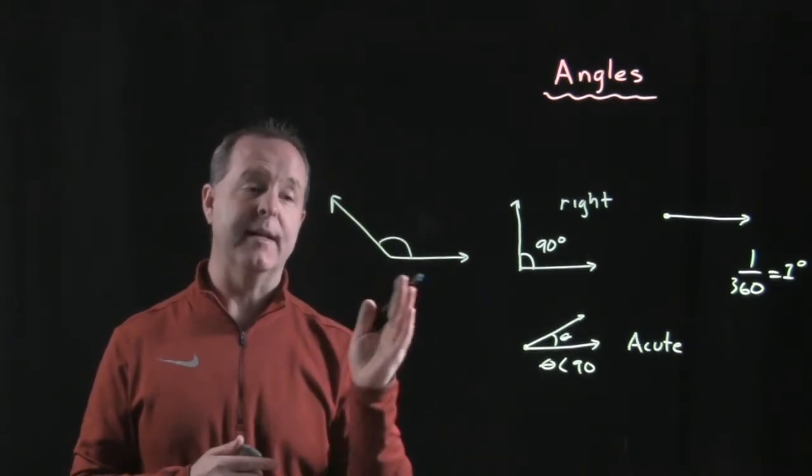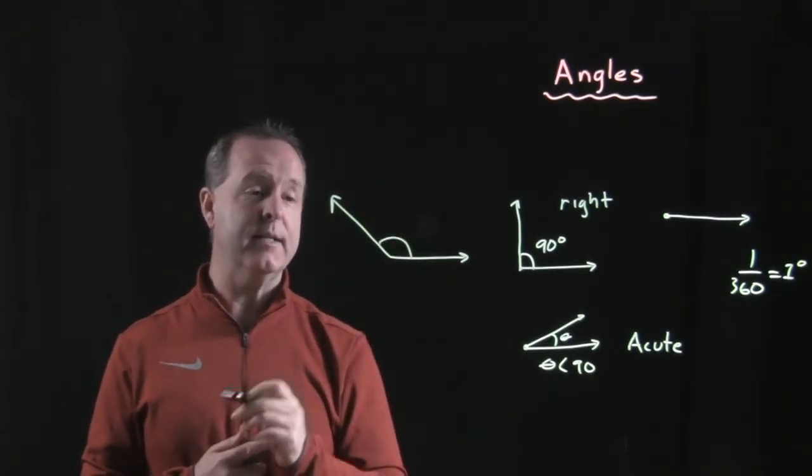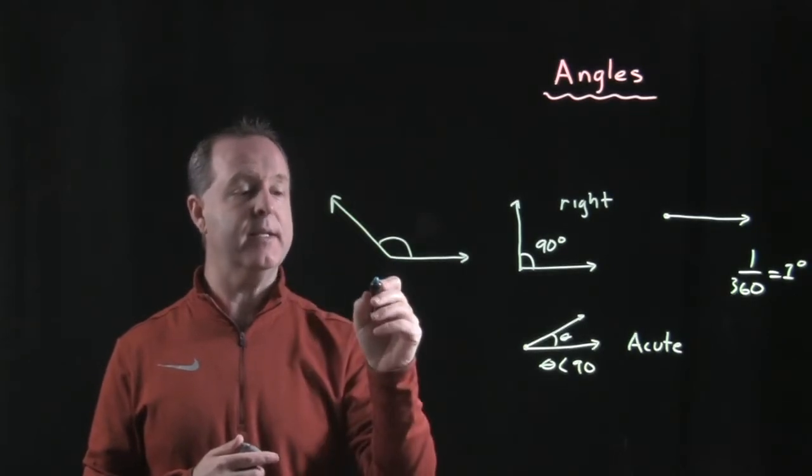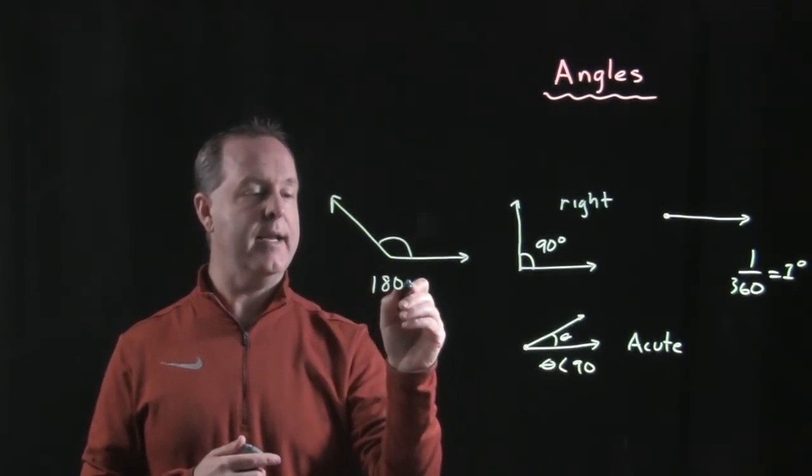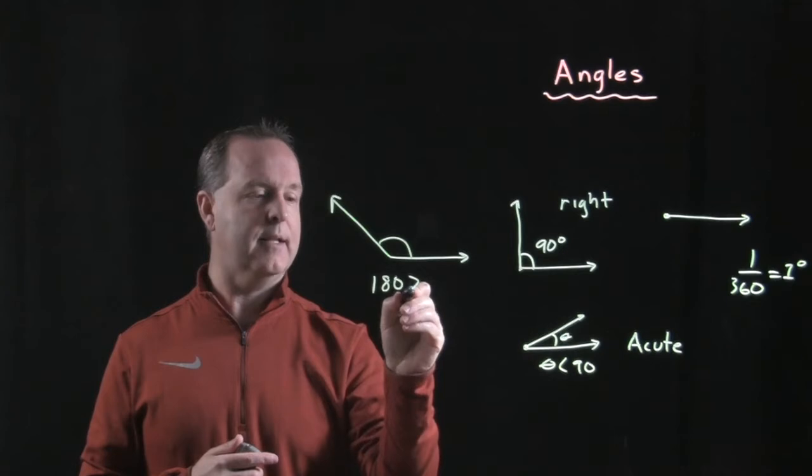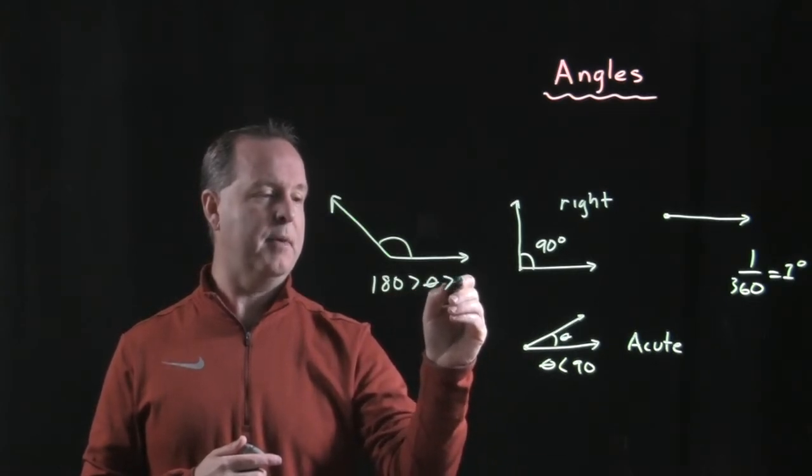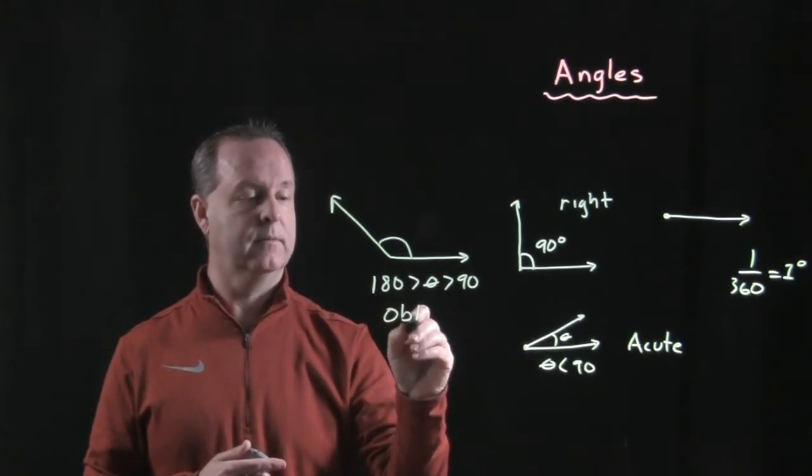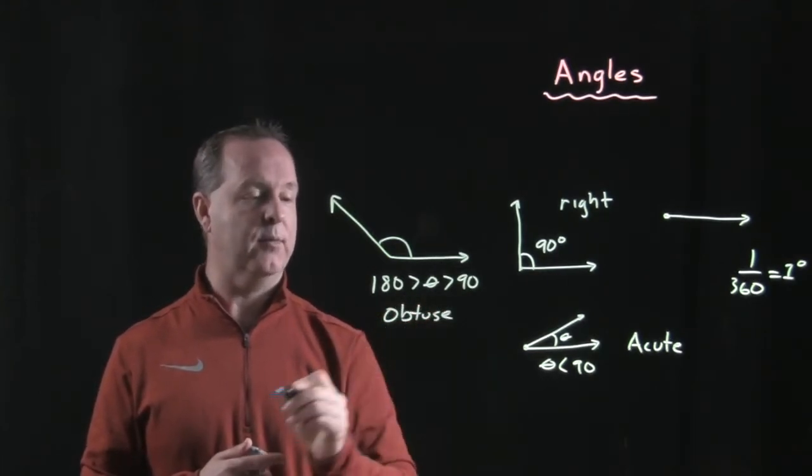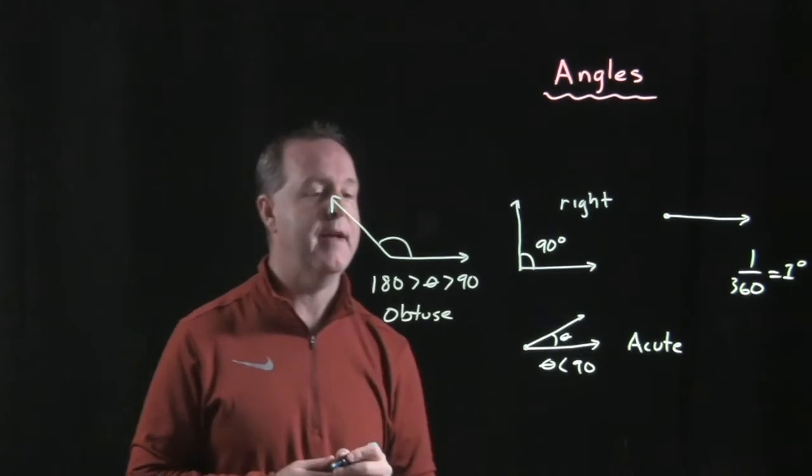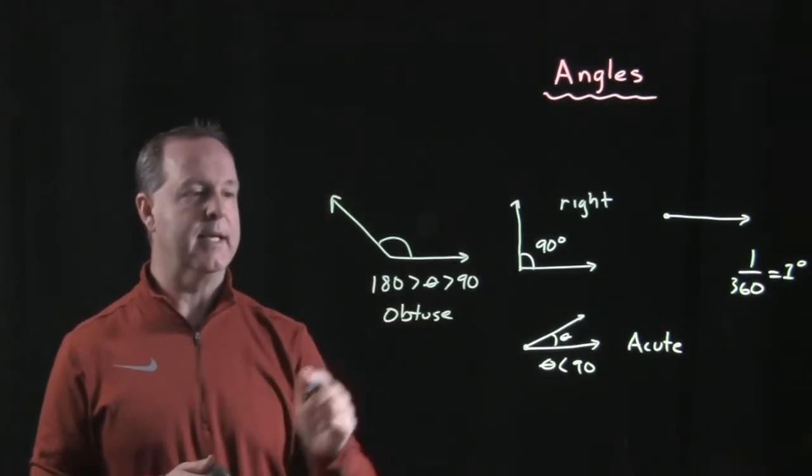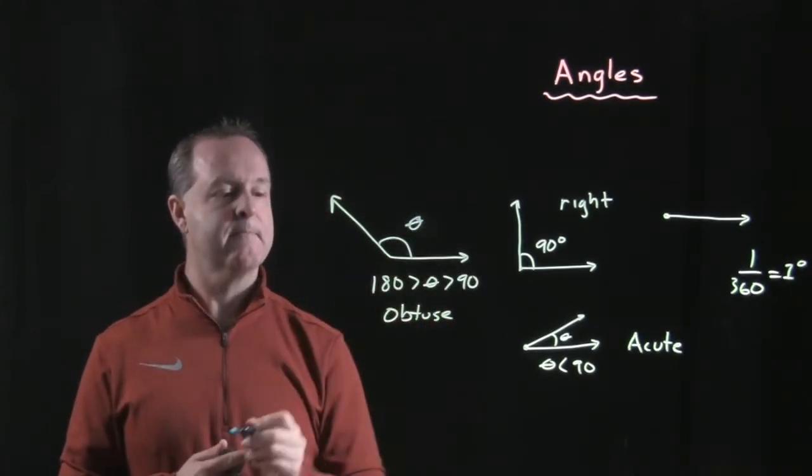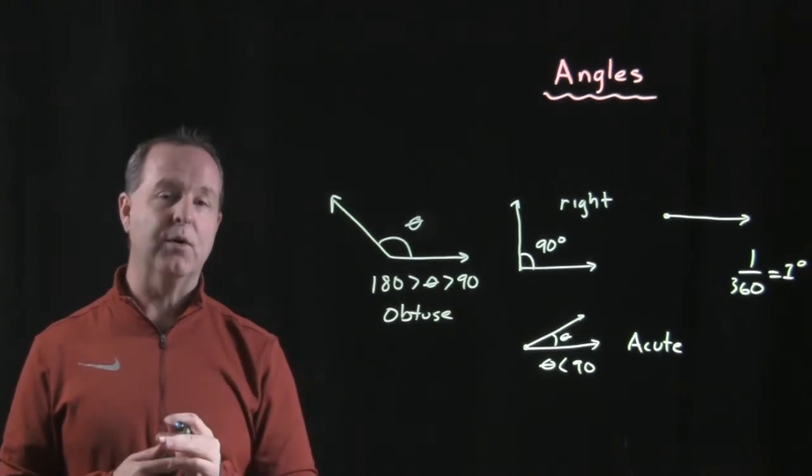If I have an angle that extends past 90 degrees and less than 180 degrees, so it's less than that but greater than 90, we would call that an obtuse angle. And for your Shawshank Redemption fans, we could use that word obtuse again.